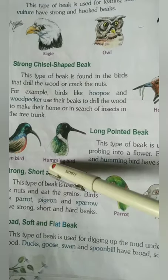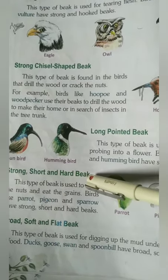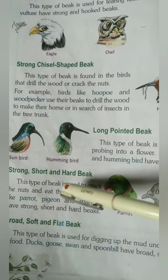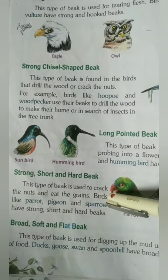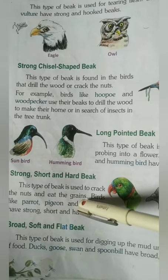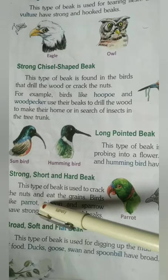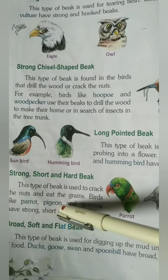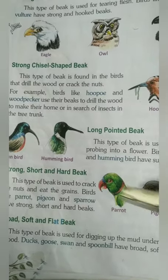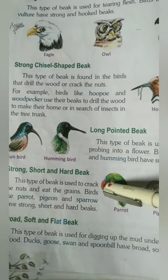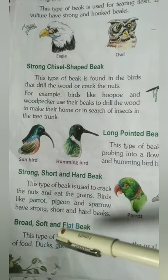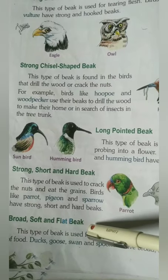The next one is the strong, short, and hard beak. This type of beak is used to crack nuts and eat grains. For example, parrot, pigeon, and sparrow. You can see that parrot and pigeon have a hard beak.